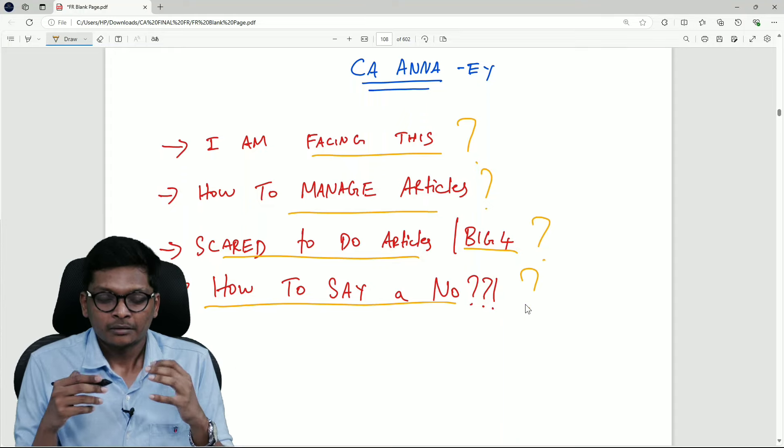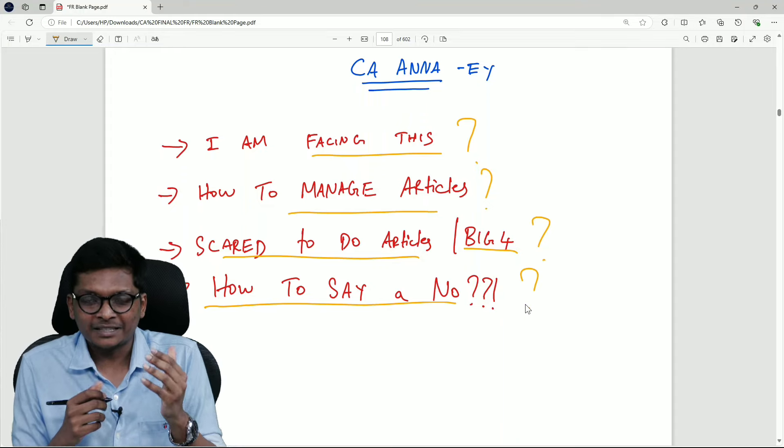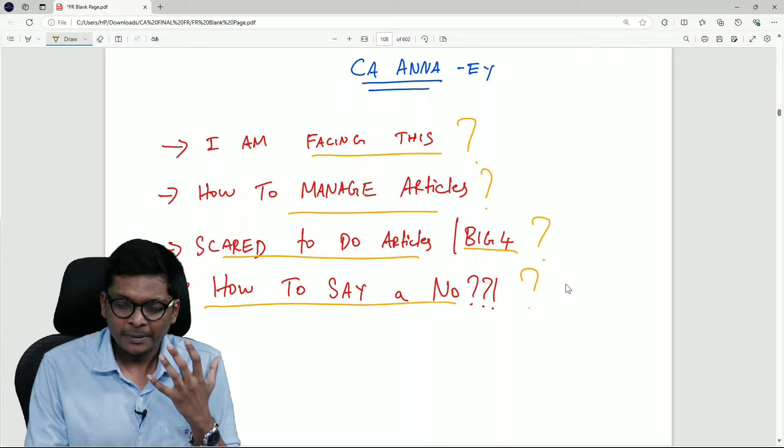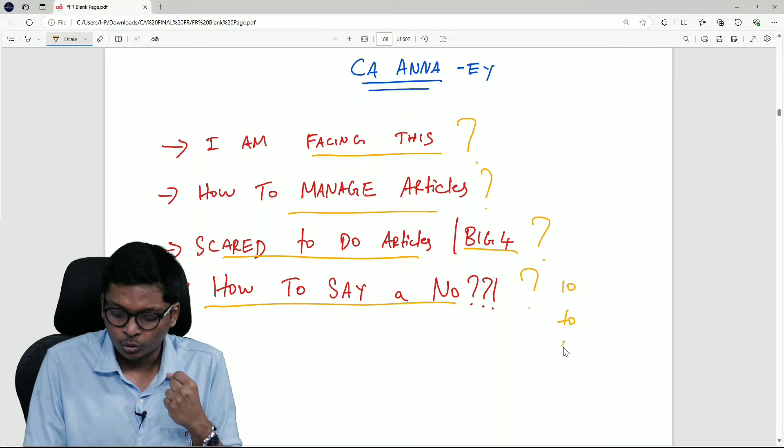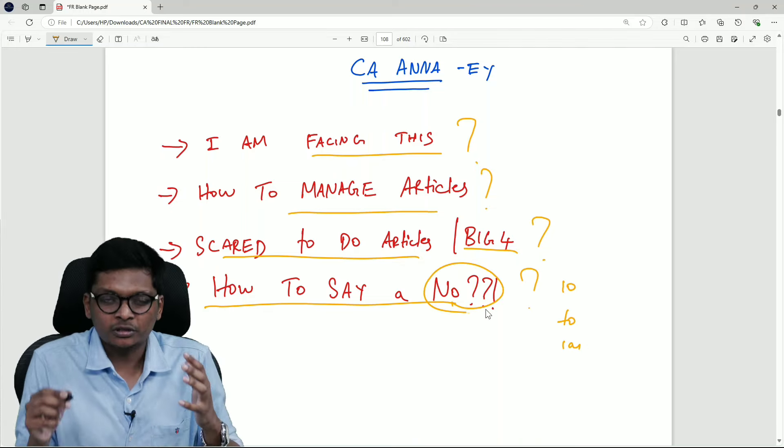How should I say a no? Some of them are like, I want to leave home at 7pm or 6pm, but my manager is saying work from 10 to 1am or 10 to 10. How to tell a no?